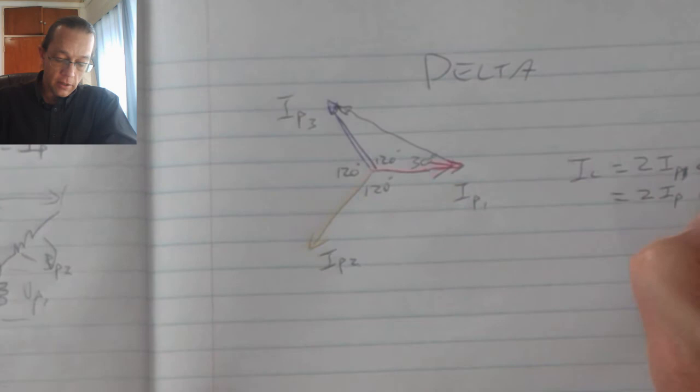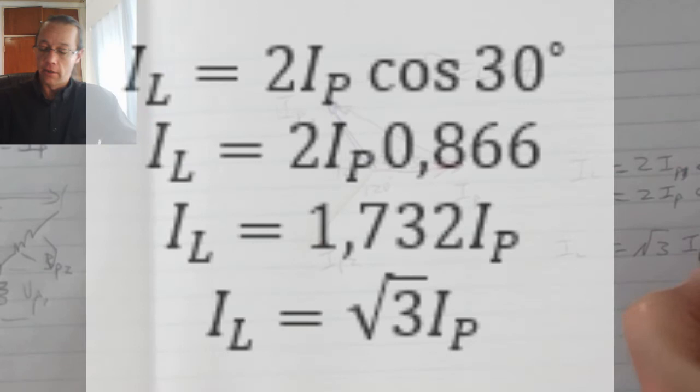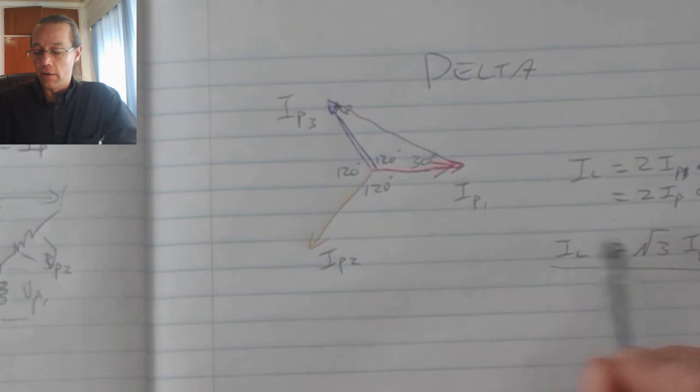So if I calculate that, two times the phase current times 0.866, and that reverts back to the line current being square root of three times my phase current. Now the method in which we get these formulas is not important, but the formula however is important.